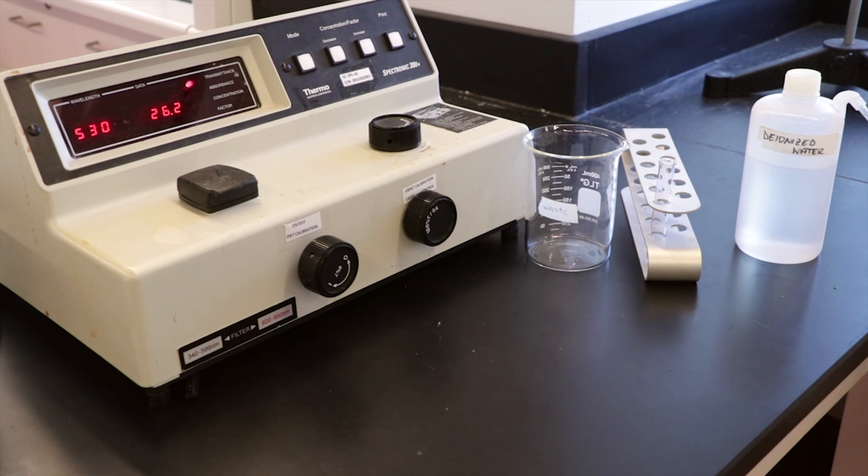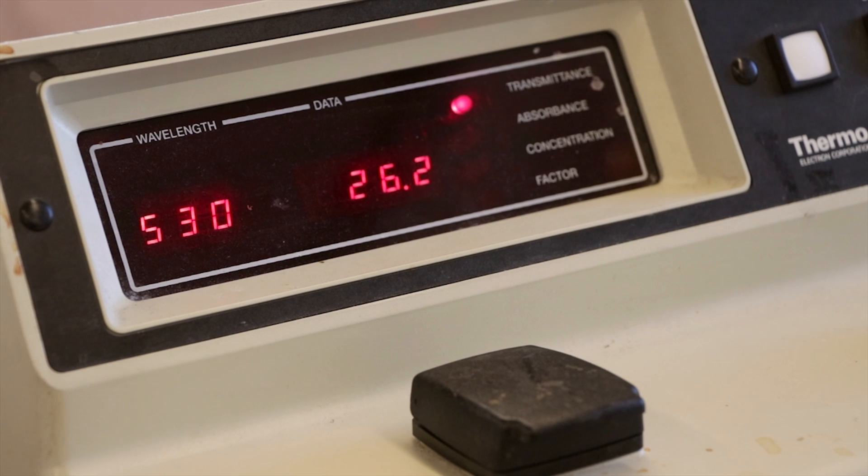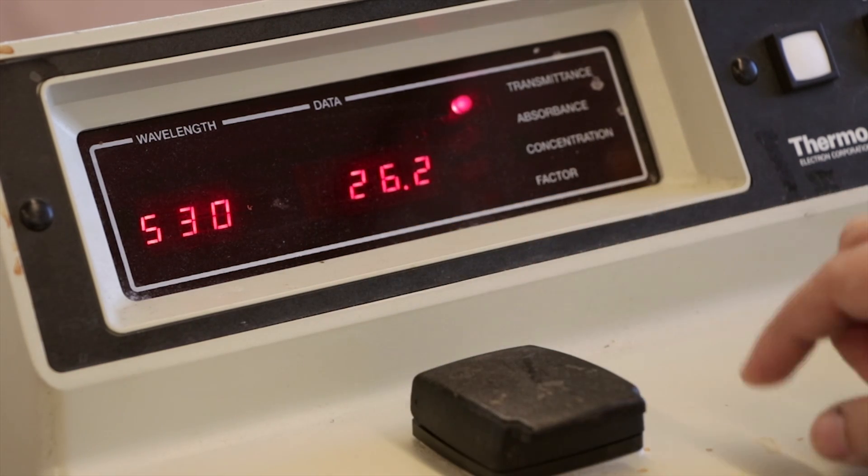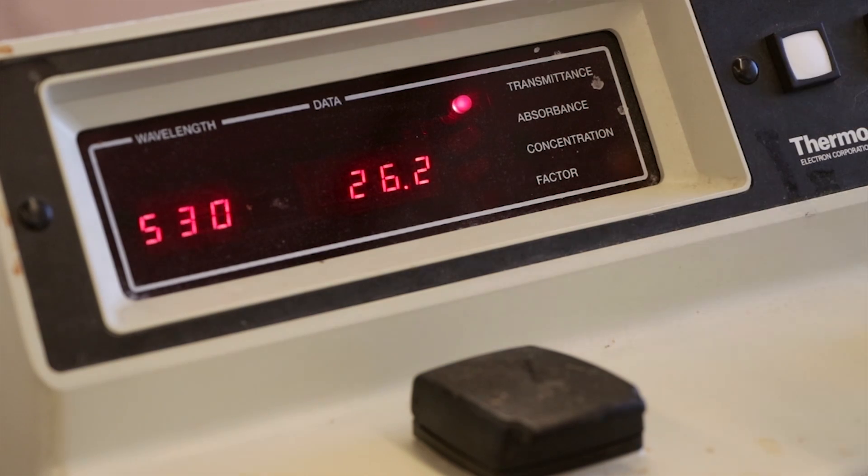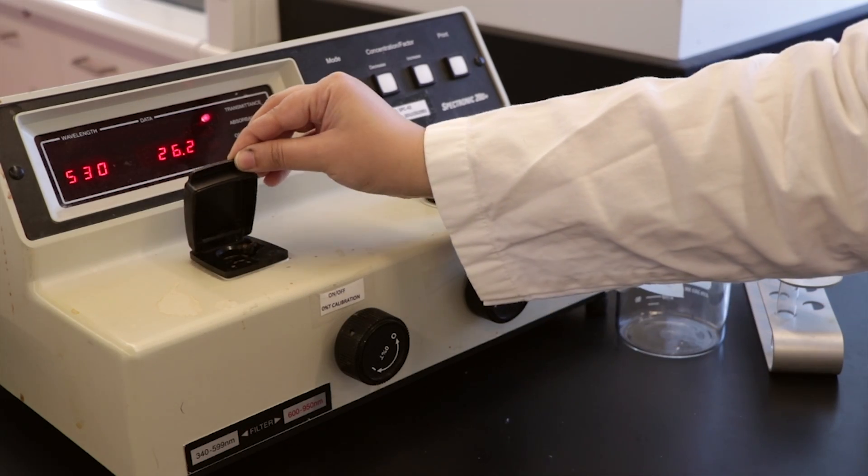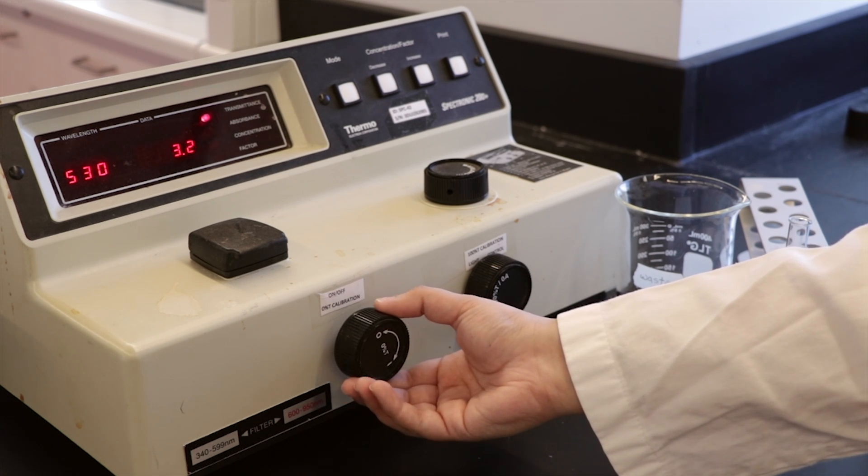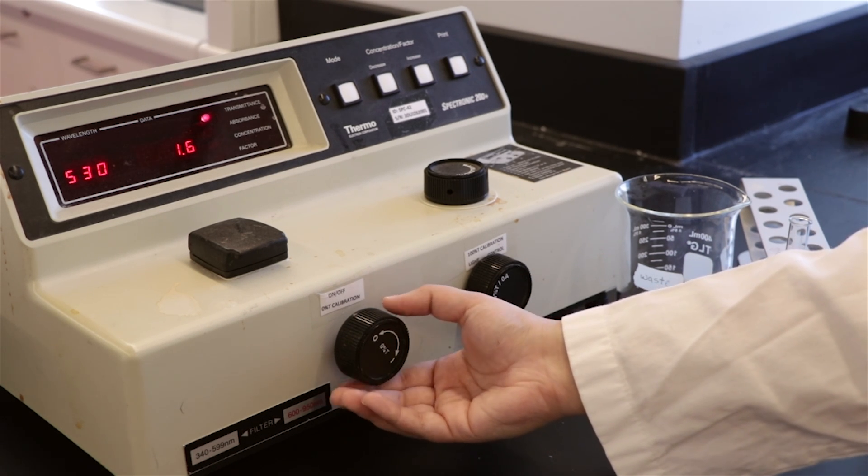Before using the spec 20, ensure that it is on for at least 20 minutes to allow the machine to warm up. Check that the wavelength is set to 530 nanometers and the mode is set to percent transmittance. First, use the left dial to set 0% transmittance. This should be done without any cuvette in the cuvette holder and the lid closed.